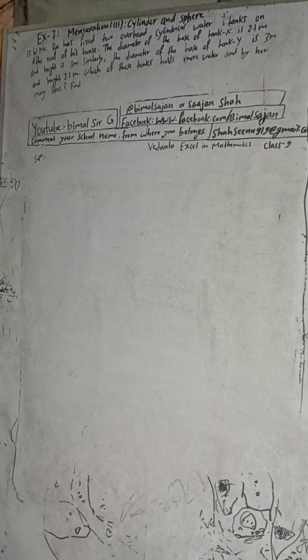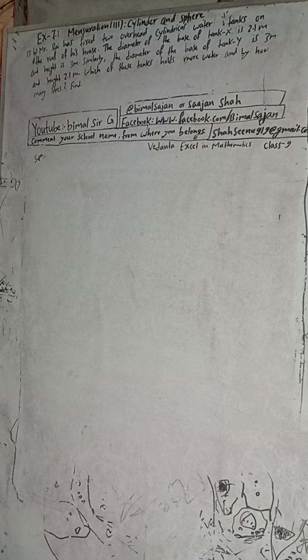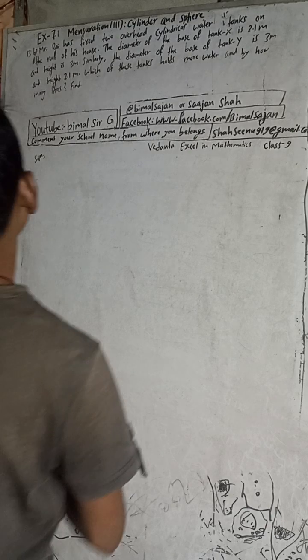Hi class 9 and 10 students, welcome back to Bhimalsarji YouTube channel. This is question number 13b, Exercise 7.1, Mensuration 3rd part — Cylinder and Sphere, Vedanta Excel in Mathematics class 9.